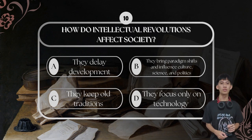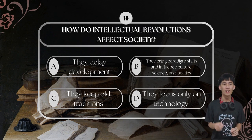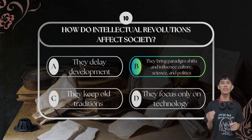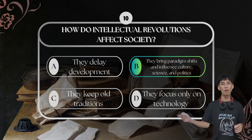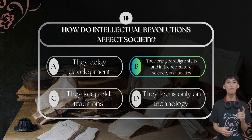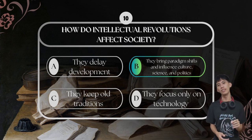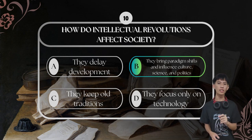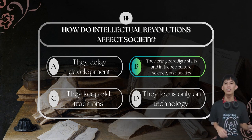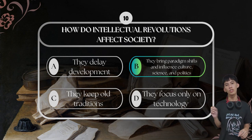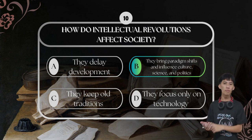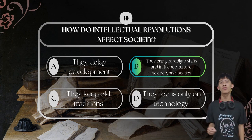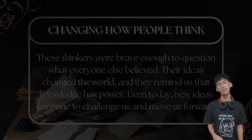For the last question, number ten: how do intellectual revolutions affect society? The answer is they bring paradigm shifts and influence culture, science, and politics. Intellectual revolutions mark turning points in human history. Each one introduces a new way of thinking that refutes outdated beliefs. These shifts have influenced cultural values, scientific advancement, and political systems, helping shape the world we live in today.